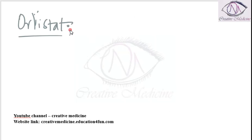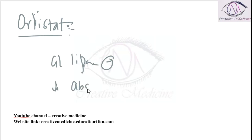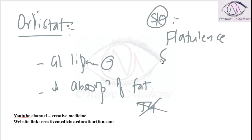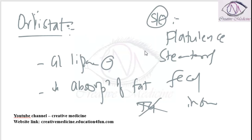Orlistat is a GI lipase inhibitor. Orlistat reduces the absorption of fat — since triglycerides are not digested, this reduces fat absorption. Side effects of Orlistat are flatulence, steatorrhoea, and fecal incontinence.